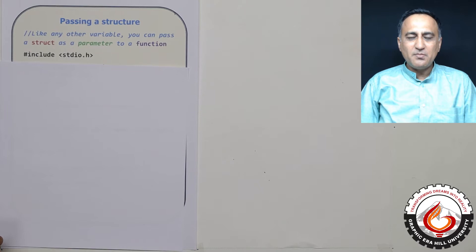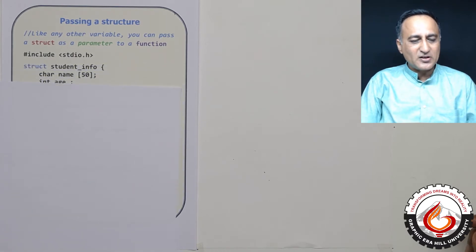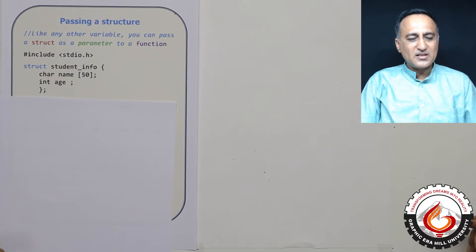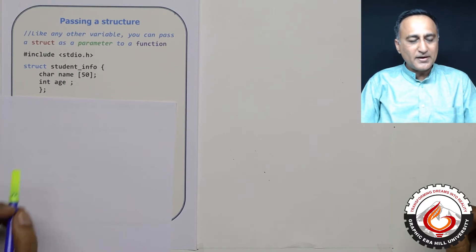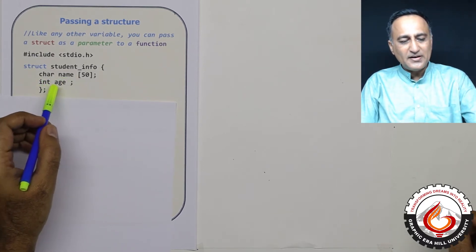Using the structure name, you can access the individual members of that particular structure. Let's first look at the declaration of the blueprint. I have a structure whose name is student_info. This is the name of the model or blueprint. It's got two members: name, size 50, and integer age.